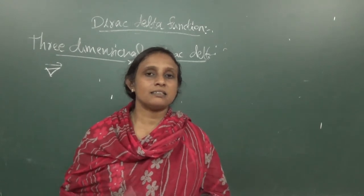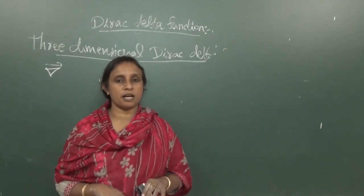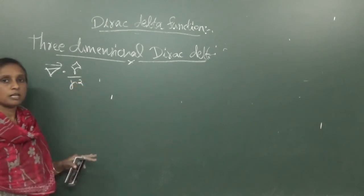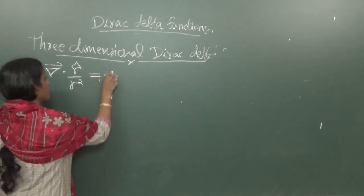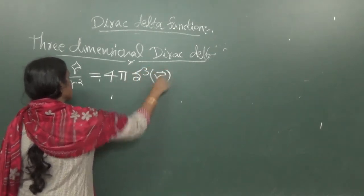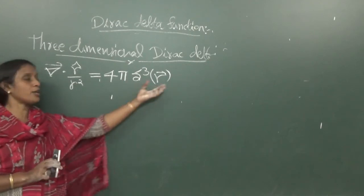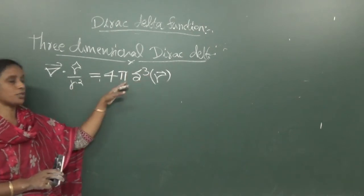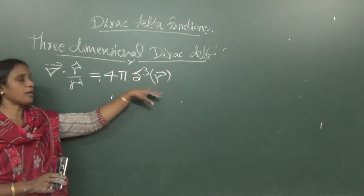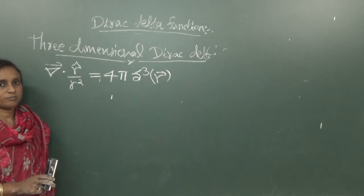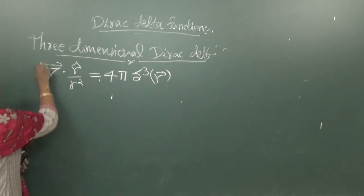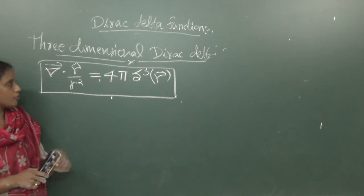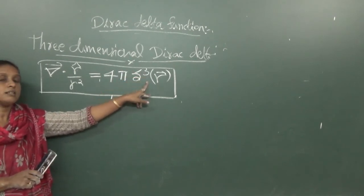Now we can address the discrepancy of the divergence of r-hat over r². We can write that the divergence of r-hat over r² equals 4π δ³(r). So if r equals 0, this divergence goes to infinity, and if r is not equal to 0, this divergence is 0. Thus, to describe the divergence of r-hat over r², we use this three-dimensional Dirac delta function.